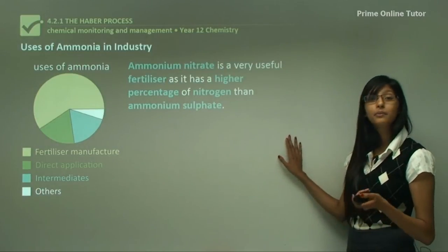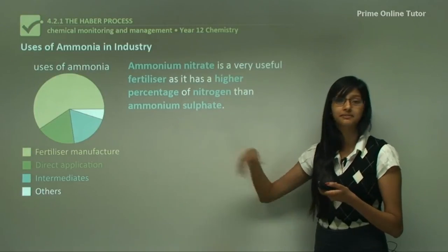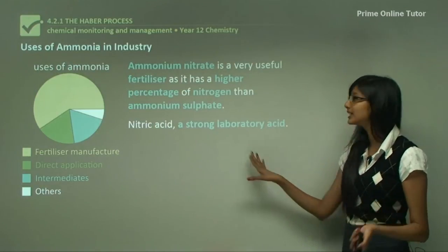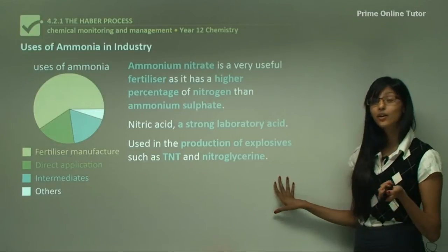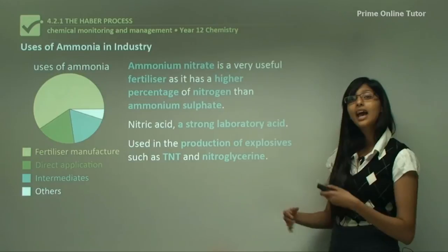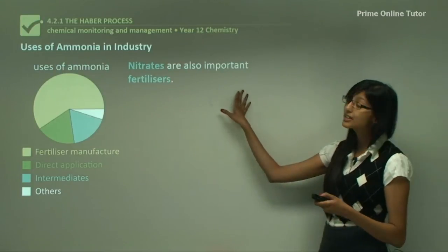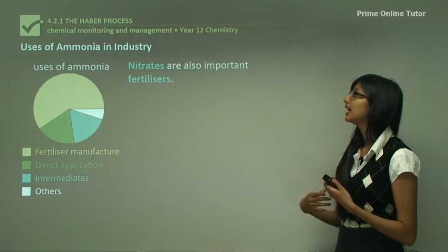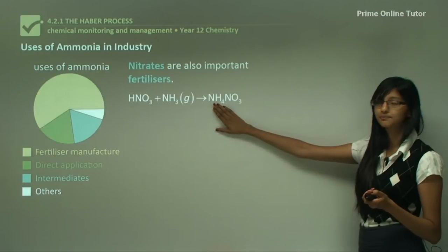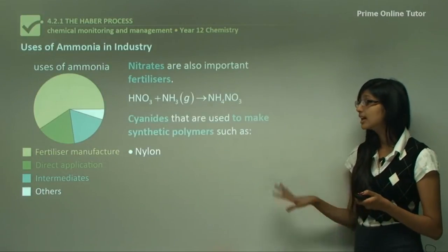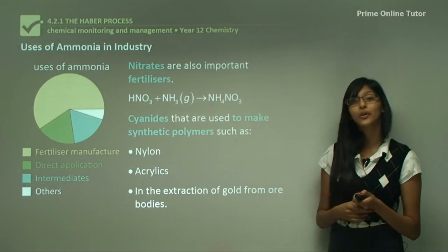Ammonium nitrate is one of the most important fertilizers because it has a very high percentage of nitrogen compared to ammonium sulfate. Nitric acid is also produced from ammonia and is a laboratory acid you should be familiar with from your school laboratory. Nitric acid can also be used to produce explosives such as TNT and nitroglycerin, and in the following parts we will see why the production of explosives was important. Nitrates are also used as fertilizers and are again manufactured from ammonia. Cyanides are also made from ammonia and are used to make synthetic polymers such as nylon and acrylics, and in the extraction of gold from ore bodies.